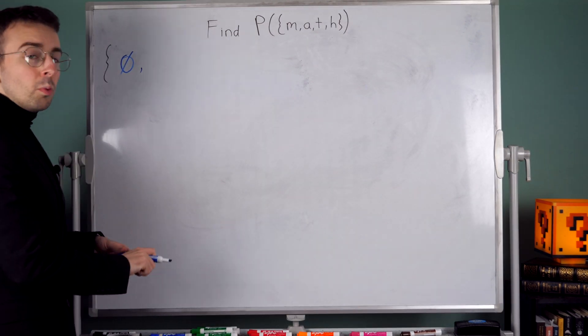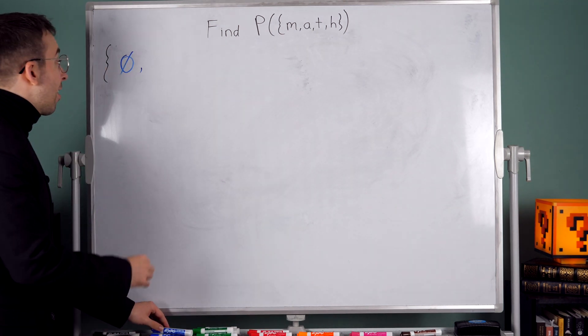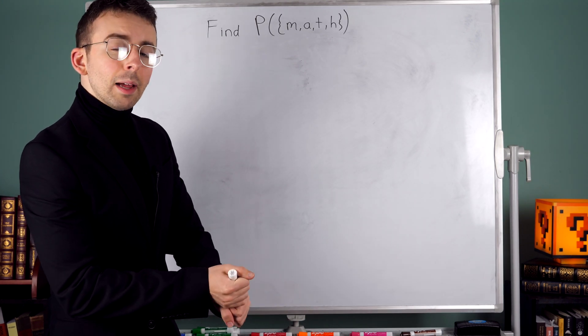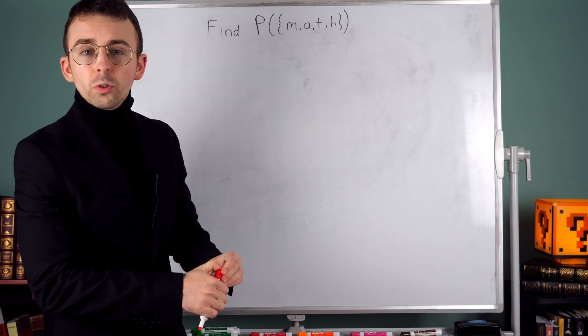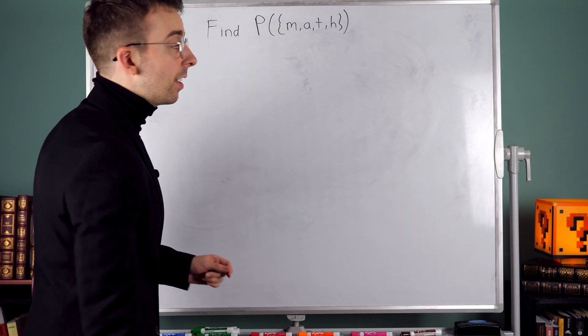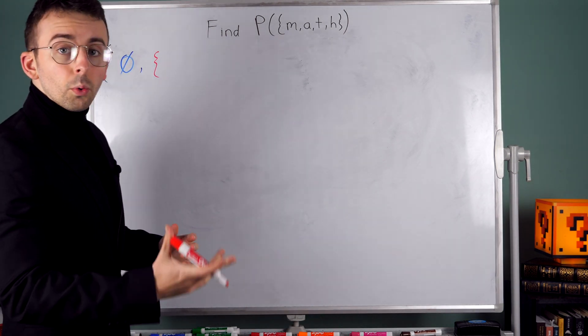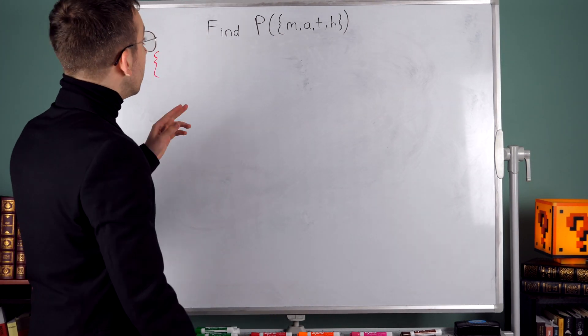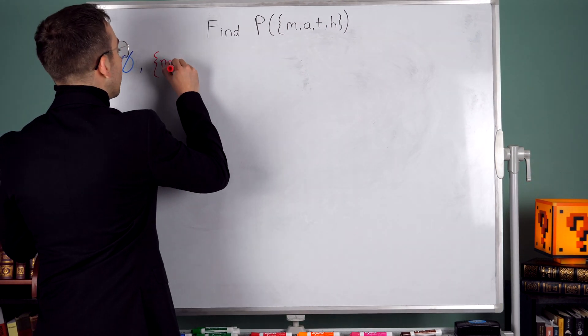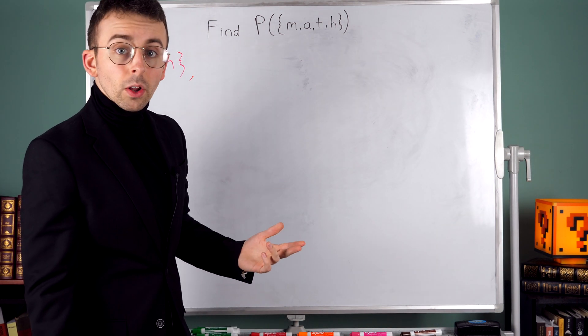Now I'm going to worry about all of the subsets that have a single element. We took care of the subsets with zero elements; now I'm going to worry about one element. And I'm going to switch colors here as I go just to hopefully make it easier to see where the sets are separated. So what subsets are there that contain only one element?